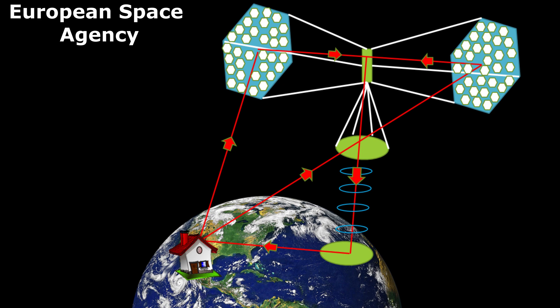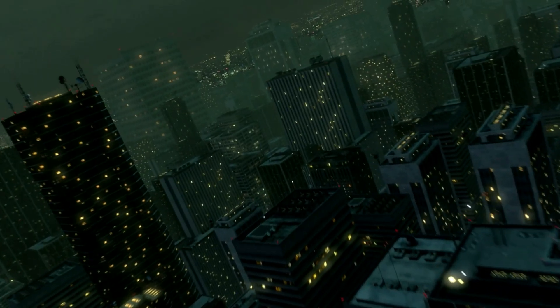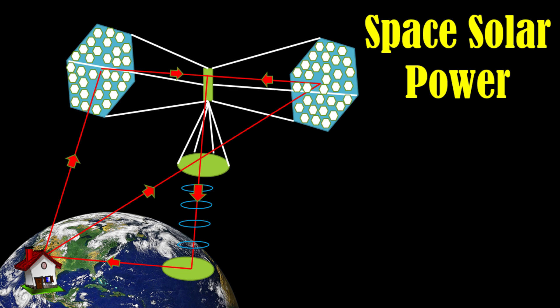The European Space Agency has planned to beam electricity wirelessly from space to power millions of homes. The agency is considering funding a three-year study called Solaris.